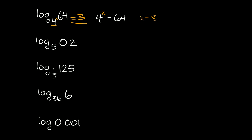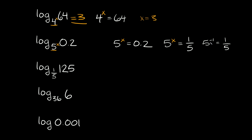Same thing over here: log base 5 of 0.2. We're just trying to figure out what the exponent is, so it's basically 5 raised to what power is equal to 0.2. Now 0.2 is the same thing as 1 fifth, so we could rewrite this as 5 raised to what power is equal to 1 fifth. The answer would be negative 1, because 5 raised to the negative 1st power is equal to 1 over 5. So log base 5 of 0.2 is equal to negative 1.